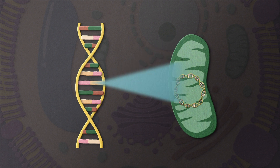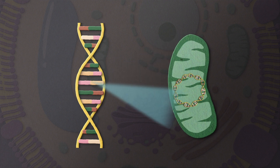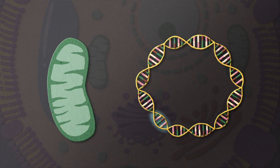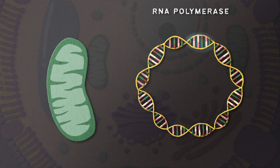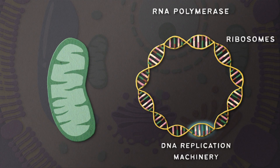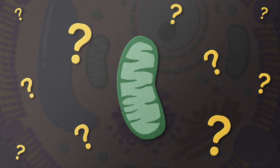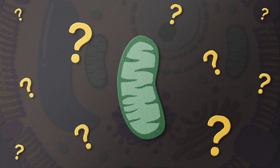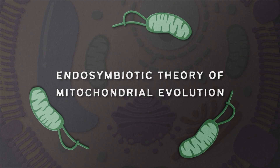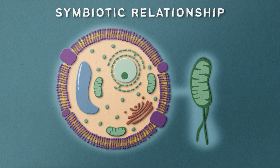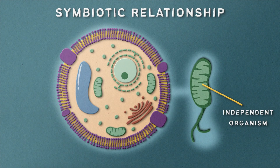Although the cell's nuclear genome does encode some of the mitochondrial proteins, the mitochondria's independent genome includes the code for their own unique transcription and translation machinery, including RNA polymerases, DNA replication machinery, and ribosomes. So, where did this odd little organelle come from? And why is it so different from other cellular aspects? This very question has led to the endosymbiotic theory of mitochondrial evolution, which suggests that mitochondria evolved from a symbiotic relationship with an independent organism.